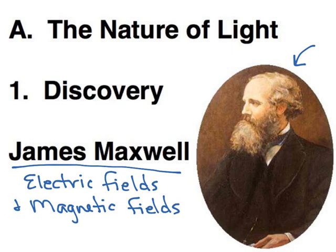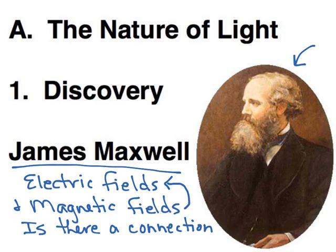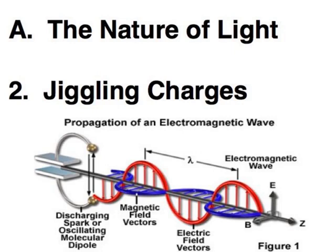He looked to see if there's a connection, and what he found was yes, there is. You can actually create an electric field from a magnetic field and you can create a magnetic field from an electric field. The key is that you have to have one moving or changing. So charged particles, if they are moving, which they all do because they have a temperature, that is what actually creates light.